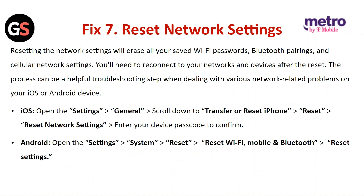Fix seven: reset network settings. Resetting the network settings will erase all your saved Wi-Fi passwords, Bluetooth pairings, and cellular network settings. You will need to reconnect your network and devices after the reset. This process can be a helpful troubleshooting step when dealing with various network-related problems. For iOS, open Settings, then General, scroll down to Transfer or Reset iPhone, then click on Reset, then Reset Network Settings. Enter your device passcode to confirm.